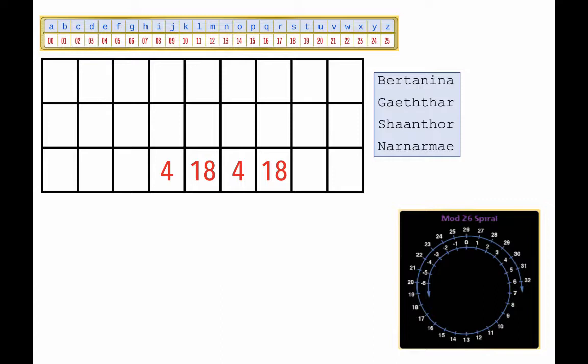In this puzzle, there are just two numbers repeated, 4, 18, 4, 18. Now, look at the names. Do you see that pattern? The only name that contains two letters repeated in the same places is Gathar.